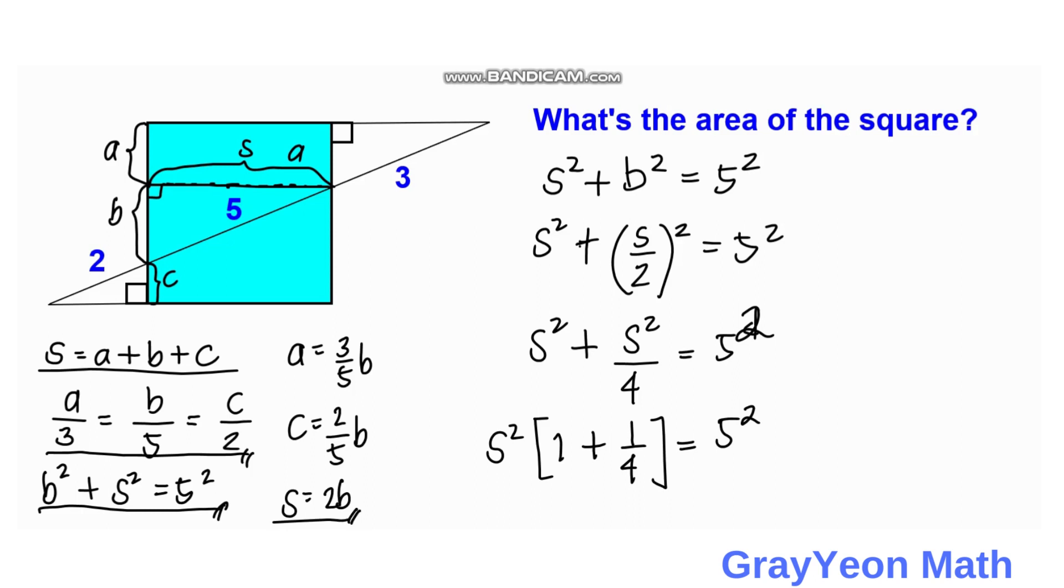So if we simplify further, then we have S squared times five over four is equal to five squared. So S squared is equal to five squared divided by five over four. Then we simply cancel this and this, and the four will go up since it will be inverted by multiplication. So S squared is equal to five times four, or S squared is equal to twenty square units.